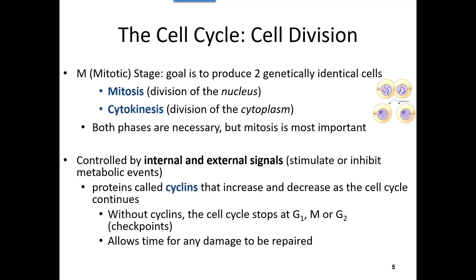What happens if something gets messed up? If chromosomes end up on the wrong side, we wouldn't have two genetically identical offspring. So there are signals monitoring, checking, and proofreading to make sure everything is happening correctly. These signals — cyclins — can stimulate or inhibit events, increase or decrease the cell cycle, and stop cell division if something is going wrong. In some cases, we can repair damage or move chromosomes around if needed. We have checkpoints along the way to make sure cell division is done correctly.